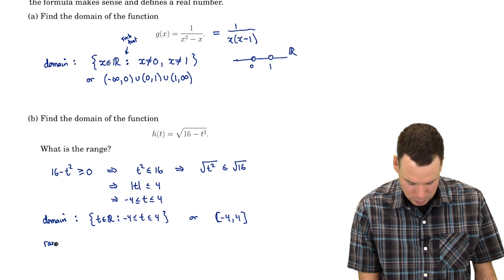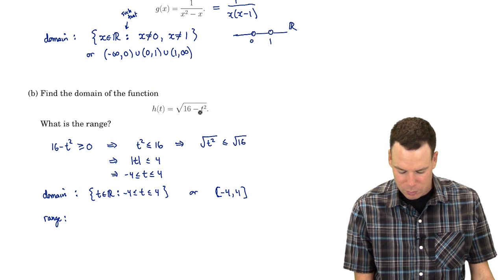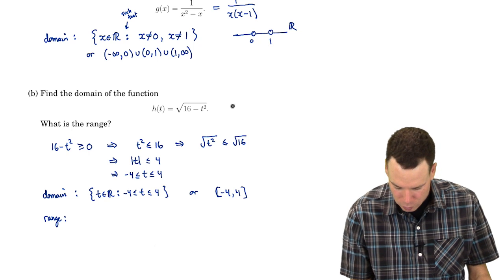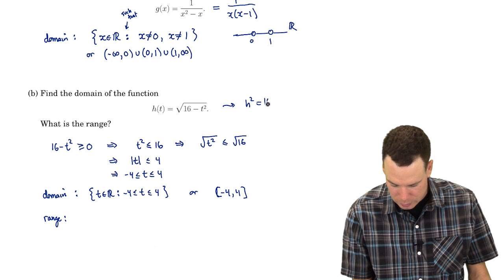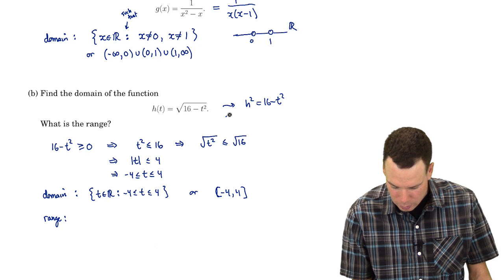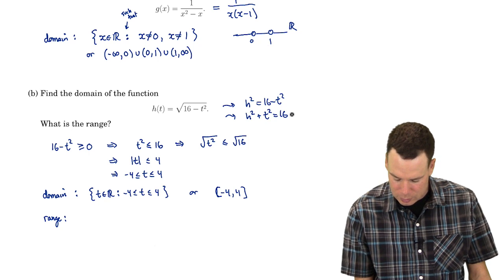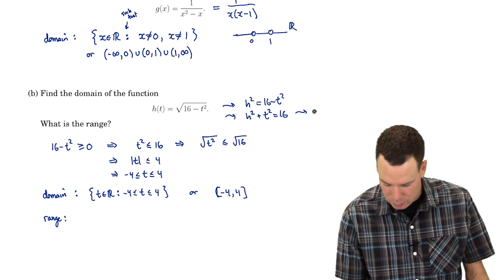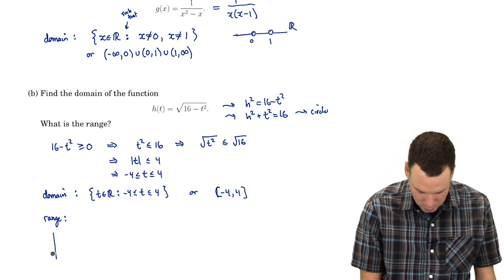What about the range? What are the possible values that come out? First, I'll square both sides: h² = 16 - t². Then I notice that h² + t² = 16, which gives me a circle.